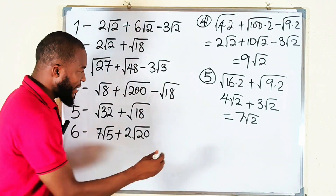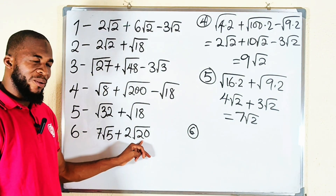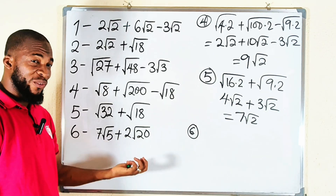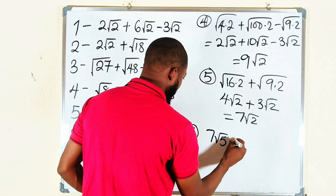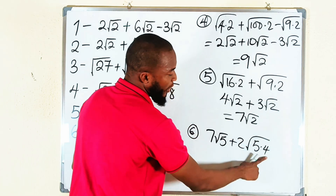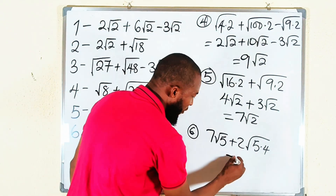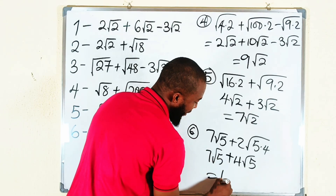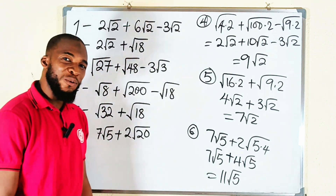The last problem: we have 7 root 5 plus 2 times square root of 20. I can see that 5 is present, so I want to express 20 as 5 times 4, and 4 is a perfect square. So this becomes 7 root 5 plus 2 times square root of 5 times 4. Square root of 4 is 2, and that 2 comes outside and multiplies the existing 2, making 4 root 5. So we have 7 root 5 plus 4 root 5, which equals 11 root 5 — seven apples plus four apples makes eleven apples.